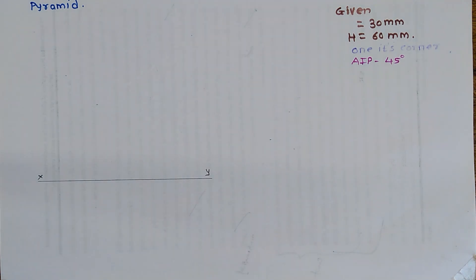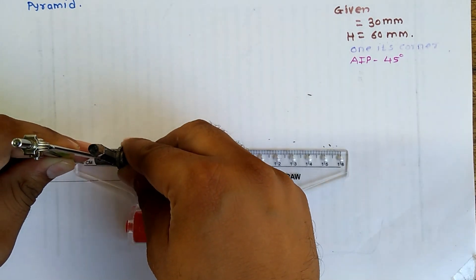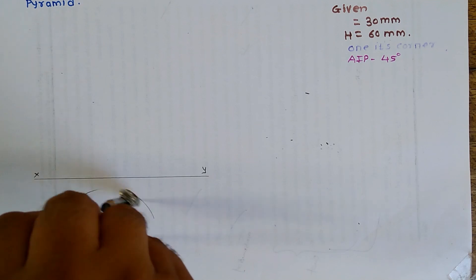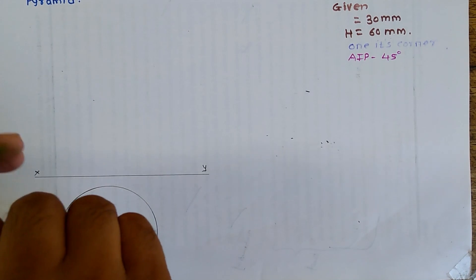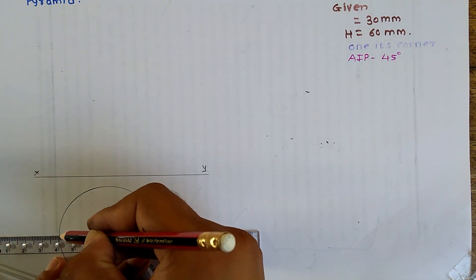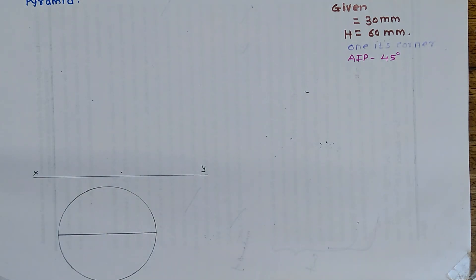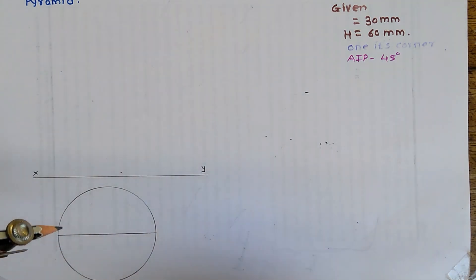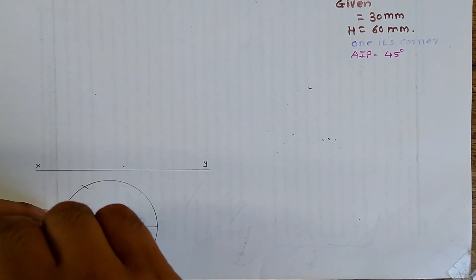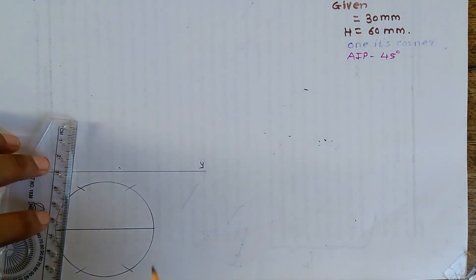Now we have to draw the hexagon. For drawing the hexagon we need the side dimension of 30 mm, so we take 30 mm radius in compass and draw a circle first. After completing the circle, I will start to draw the hexagon by taking a horizontal dimension. With the help of a protractor or compass, I will take 30 mm and mark arcs on two sides of each corner.